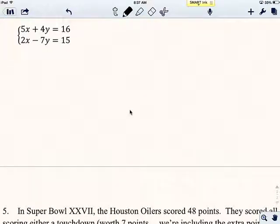Okay, now this is question four. Alright, I've got another set of equations here. 5x plus 4y equals 16, and 2x minus 7y equals 15.